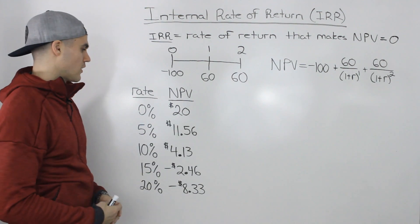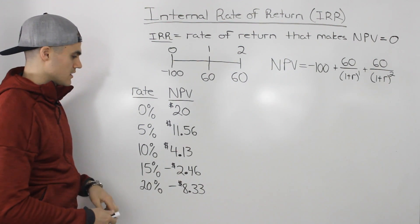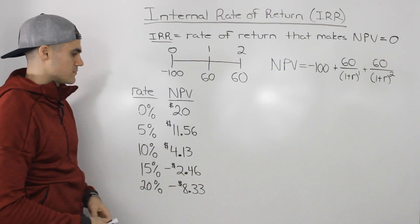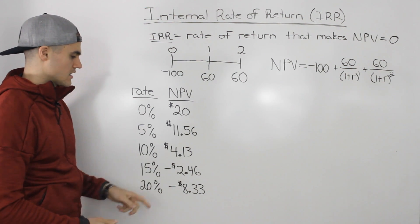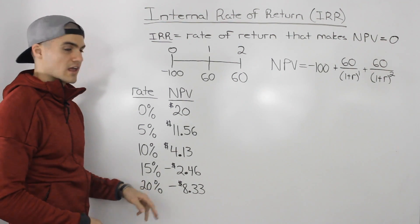And similarly if you follow that process with a couple of more rates. So I use 10 percent, 15 percent, 20 percent. You would get these respective NPVs here: $4.13, negative $2.46, and negative $8.33.